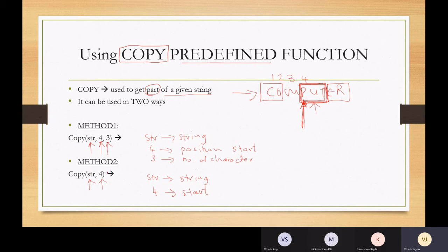But it's not telling us how many characters to take from the starting position like method one. So in method two, if only two parameters are used, then from the starting position, it'll go to the end. It automatically copies right till the end.